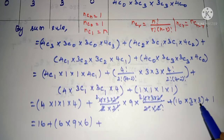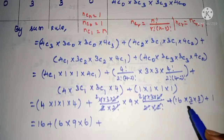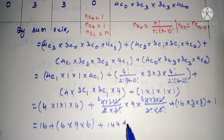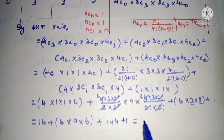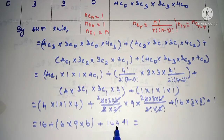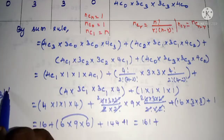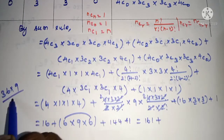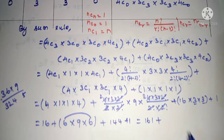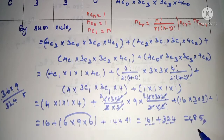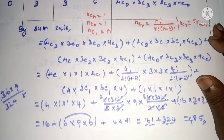The fourth term: 4C0 × 3C3 × 3C3 × 4C0 = 1×1×1×1 = 1. Now adding all terms: 16 + 324 + 144 + 1 = 485. So there are 485 ways to invite three ladies and three gentlemen to the dinner party, with three from the man's relatives and three from the wife's relatives.